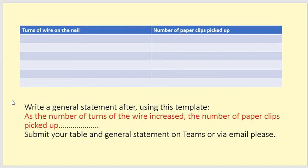Now, after you've done the practical, to show me you've understood it, I want a general statement. The red is your template, and I've started it off for you as the number of turns of the wire increased. So, that is from this column here. Here, you see your general statement actually relates to your table, turns of wire, the number of paperclips picked up, and then something...